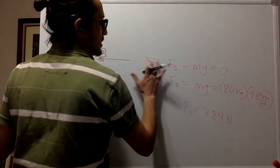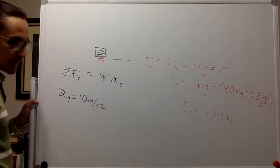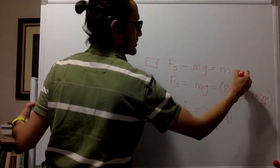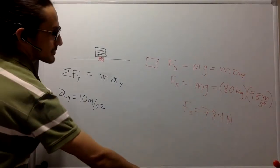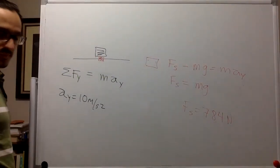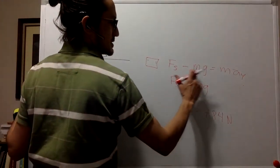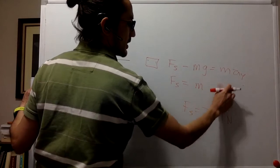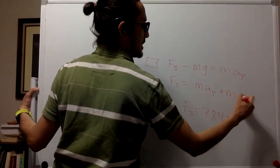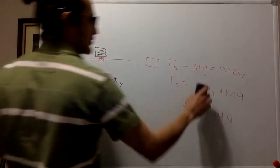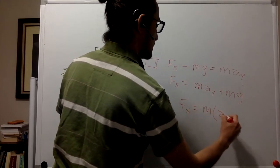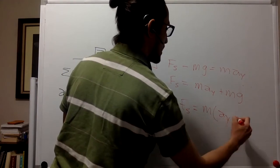So now we have the same equations except that this is not going to be equal to zero. This is going to be equal to mass times acceleration in y. So then fs, which is the measurement that we're performing, is going to be m a in the y direction plus mg. Or if we want to factorize this, fs is equal to m times acceleration in y plus g.